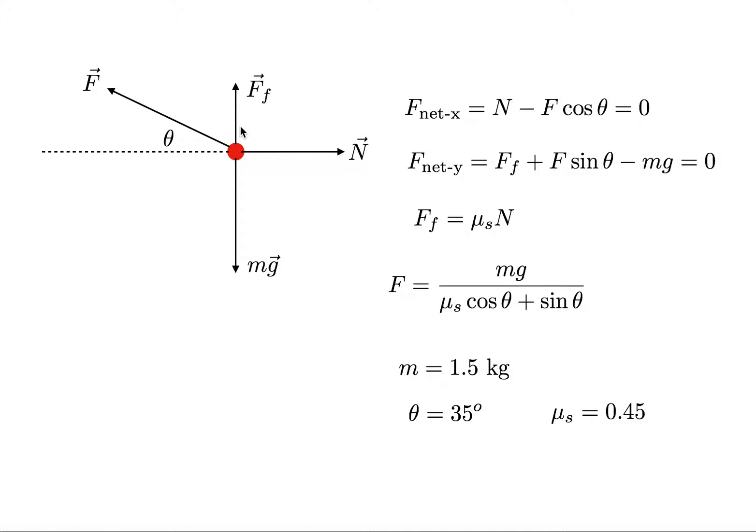In the y direction, I have three forces. I have the friction force pushing up, gravity's pulling down, and then the vertical component of this force, which we'd use sine. So I get friction plus the component of the force, f sine theta, minus mg equals zero.